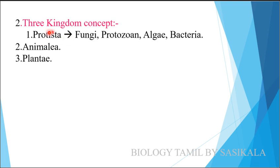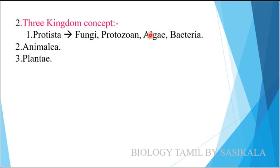In the Three Kingdom Concept by Haeckel, the three kingdoms are: Protista, Animalia, and Plantae. Plantae includes all plants, Animalia includes all animals. Protista includes Fungi, Protozoa, Algae, and Bacteria — all these are grouped under Protista.